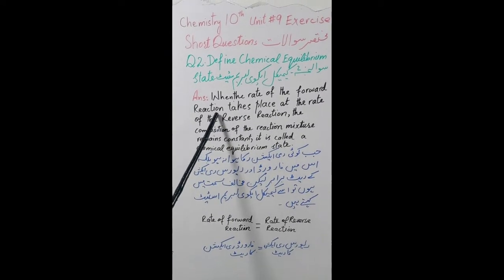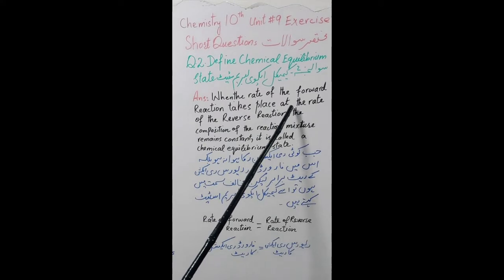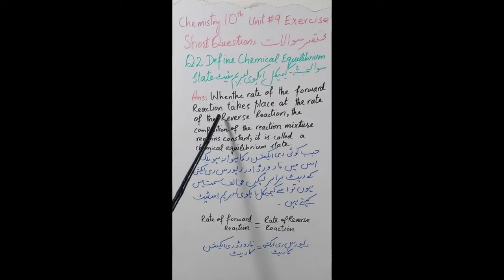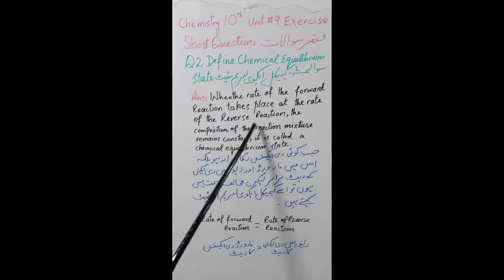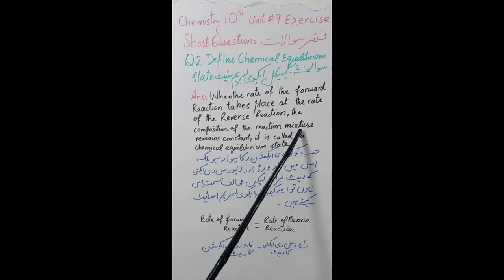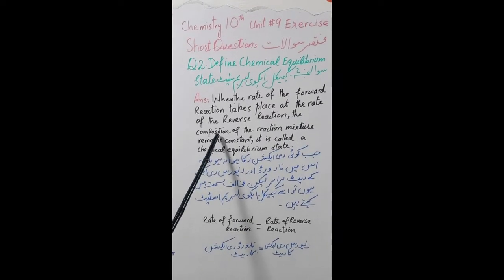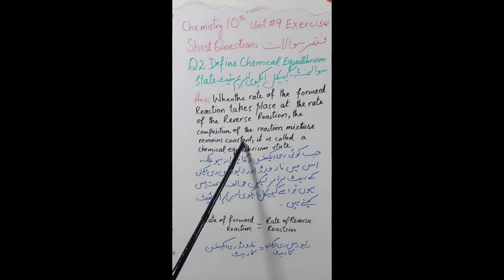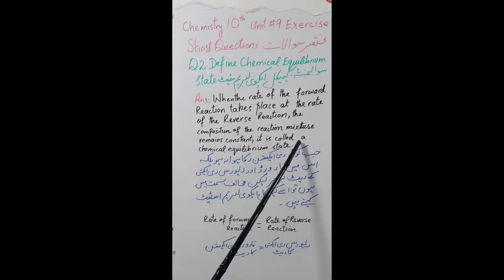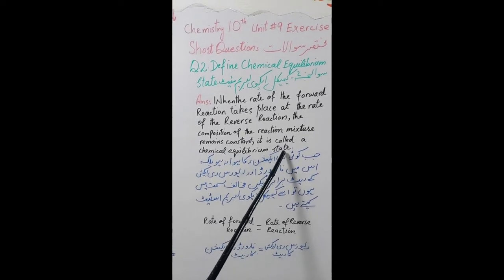...takes place at the rate of reverse reaction — when the rate of forward reaction equals the rate of reverse reaction — the composition of the reaction mixture remains constant. It is called a chemical equilibrium state.